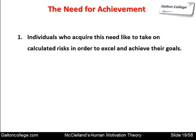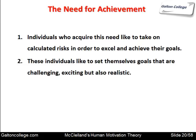The first need is the need for achievement. Individuals who acquire this need like to take on calculated risks in order to excel and achieve their goals. They like to take on a task that's difficult but achievable. They like to take on tasks because they want to achieve and want to be recognised for it. These individuals like to set themselves goals that are challenging and exciting but also realistic — they like something difficult and challenging that they can do, and when they've done it, they enjoy the applause and praise for having achieved that particular task.